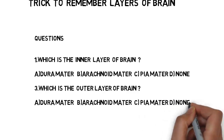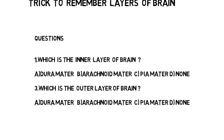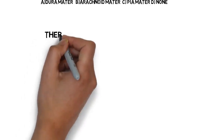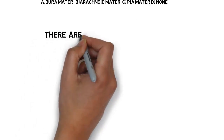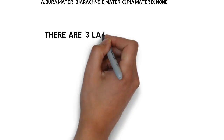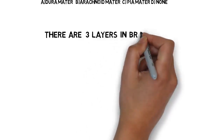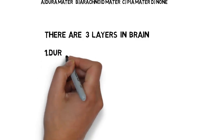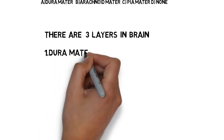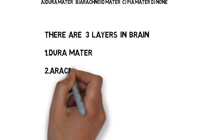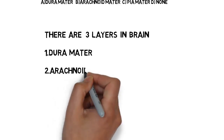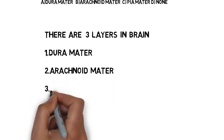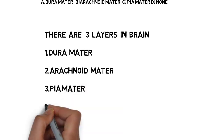Friends, if you know these answers, it's well and good. If you don't know, don't worry. Let us see the trick and its explanation. There are a total of 3 layers in the brain. First one is Duramater. Second one is Arachnoid Matter. Third one is Piamater.